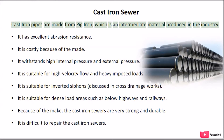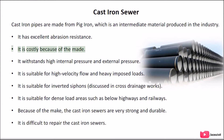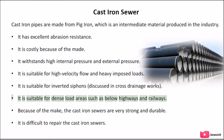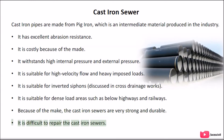Cast Iron Sewer: Cast iron pipes are made from pig iron, which is an intermediate material produced in the industry. It has excellent abrasion resistance. It is costly because of the manufacturing process. It withstands high internal and external pressure. It is suitable for high velocity flow and heavy imposed loads, for inverted siphons discussed in cross-drainage works, and for dense load areas such as below highways and railways. Because of how they are made, cast iron sewers are very strong and durable, though they are difficult to repair.